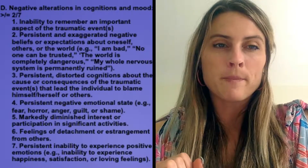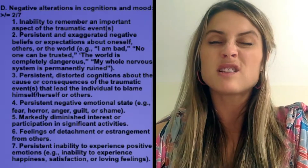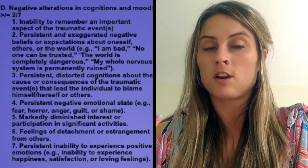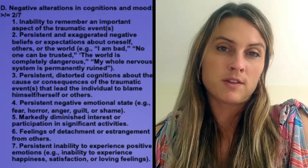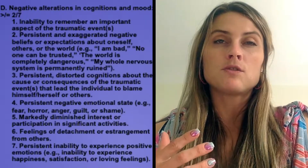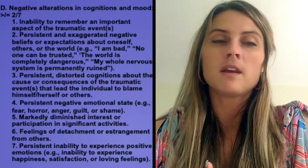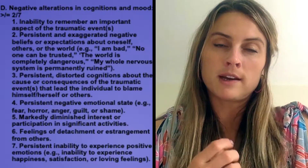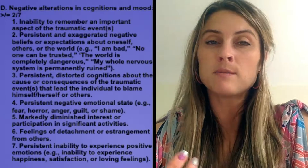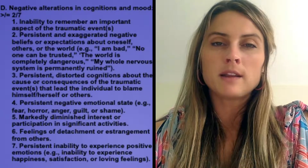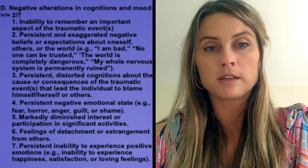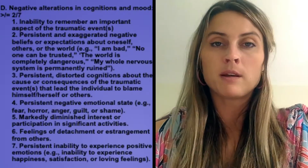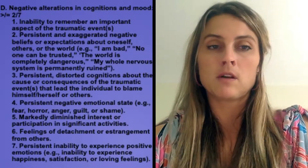The fifth criterion is markedly diminished interest or participation in significant activities — similar to anhedonia in depression, you're not as interested in things, not motivated, and you don't do the things you used to enjoy before the traumatic event. The sixth is feelings of detachment or estrangement from others — not being able to connect and feel that sense of warmth from being with another person in conversation or in relationship. The seventh, last but not least, is persistent inability to experience positive emotions — happiness, sense of satisfaction in life, or loving feelings.